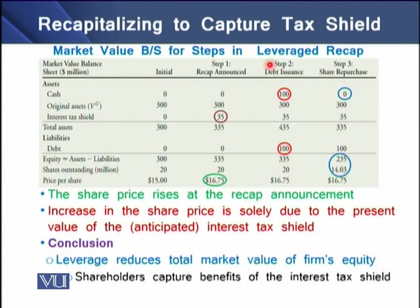In step two, when the firm issues debt, there is a cash proceed of $100 million, so total assets are now $435 million. With $100 million of debt on the liabilities side, the equity is the difference between total assets and debt, which is $335 million. Dividing this equity over the 20 million shares, we again have a share price of $16.75 each.